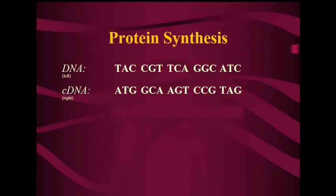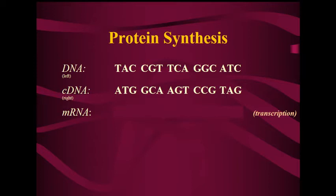Going back to our sheet where we have our DNA — the left and the complementary right side — we're going to show transcription. In transcription, we're going to be making our mRNA. mRNA is only made off of one strand of DNA. Your body knows which side of the DNA to use as the template strand and which strand to leave alone. In this example, we're going to use the left DNA strand as our template strand.